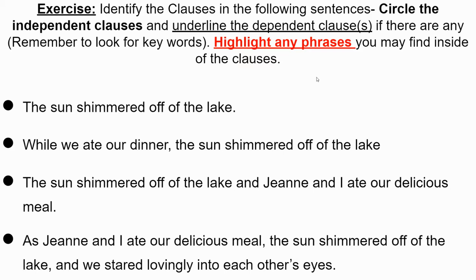'As Jean and I ate our delicious meal, the sun shimmered off of the lake, and we stared lovingly into each other's eyes.' Here is the coup de grâce — the compound-complex sentence. It starts with a dependent clause: 'As Jean and I ate our delicious meal' — Jean and I are the subject, ate is the predicate. Then the independent clause: 'the sun shimmered off of the lake' — sun and shimmered, subject and predicate. Combined with 'and,' plus 'we stared lovingly into each other's eyes' — we is subject, stared is predicate. Two independent clauses and a dependent clause make a compound-complex sentence.